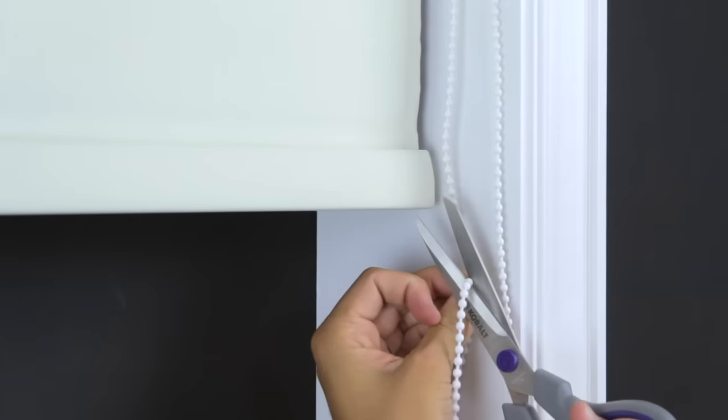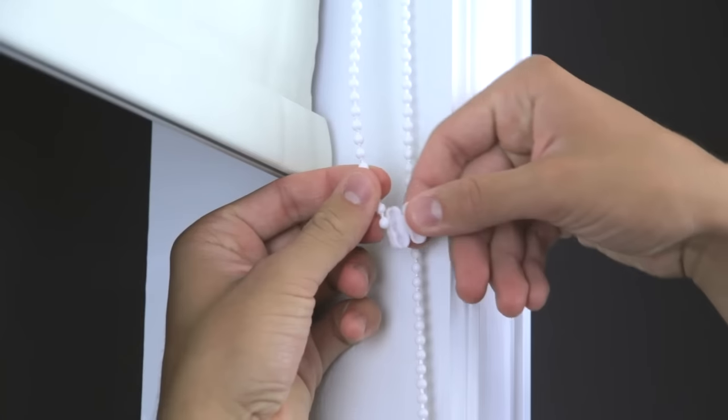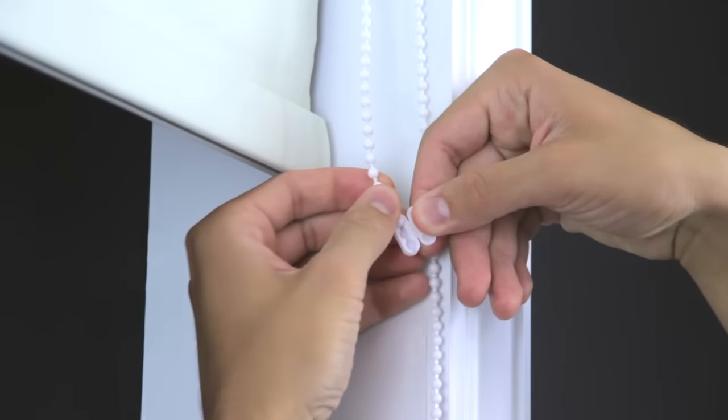Cut any excess chain and install the connector. Make sure to leave a little slack in the chain so it moves freely.